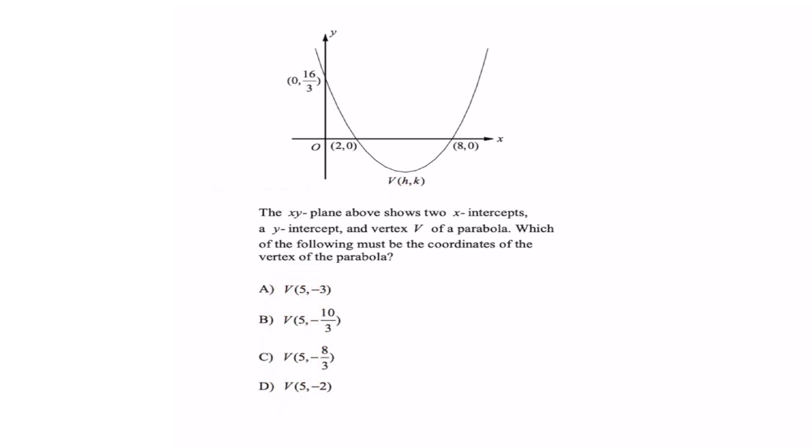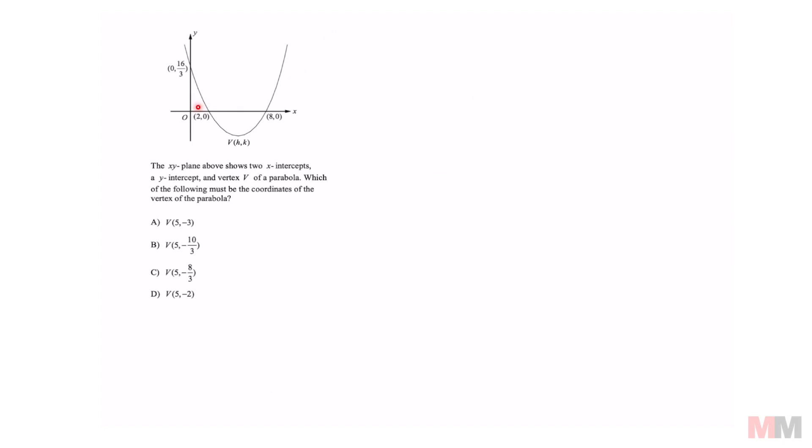And how'd they get that? Super easy. They just found the midpoint of 2 and 8 since the vertex is in the middle of those two. So you can run the midpoint formula: 2 plus 8 divide that by 2 to equal 5. That is how they got h.